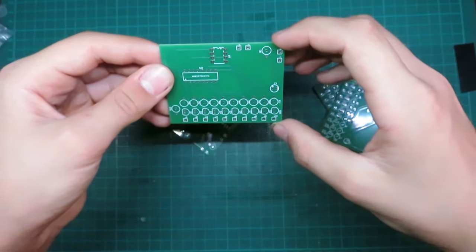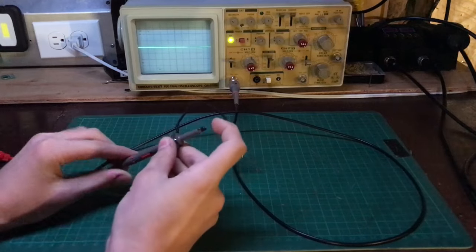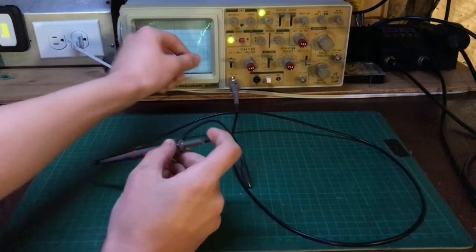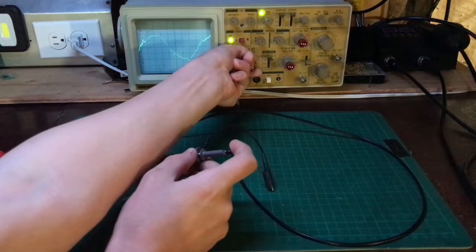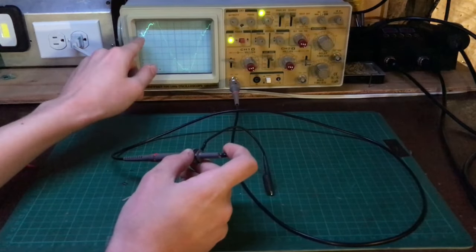So for your oscilloscope settings, just touch your finger to the end of your probe and see what best comes up on screen. So this looks pretty good right here where I can see one sine wave.